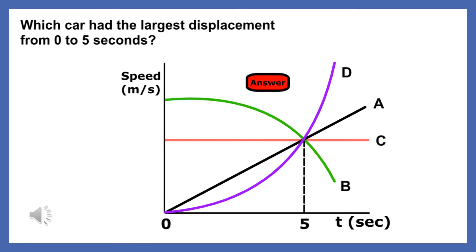Here is a speed versus time plot for 4 objects. Which object had the greatest displacement from 0 to 5 seconds? There are no numbers on this graph, so we cannot calculate the displacement for any of these objects.